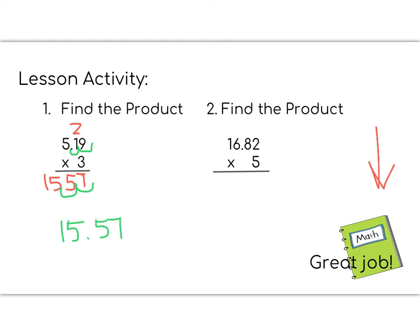Notice that in product 2, you are still moving 2 decimal places. So your answer should have 2 numbers, and then a decimal point, and then 2 more numbers. Go ahead and try number 2 on your own. I look forward to seeing your answer in class tomorrow. Great job!